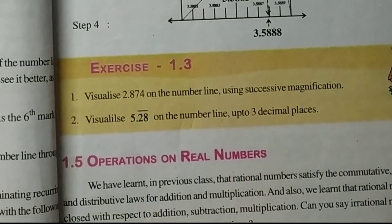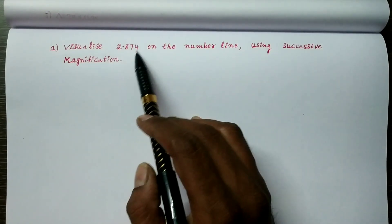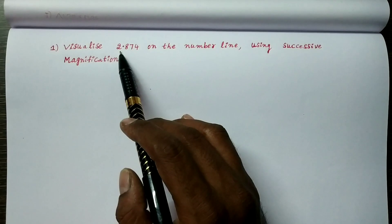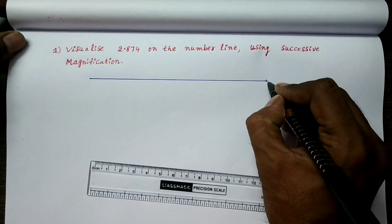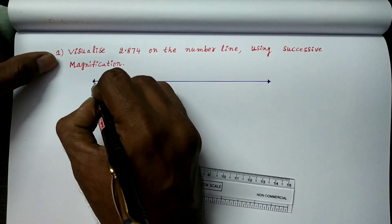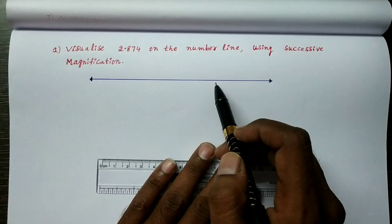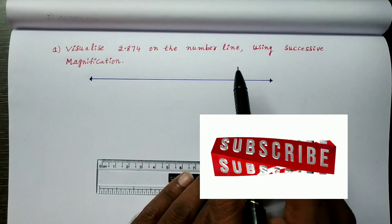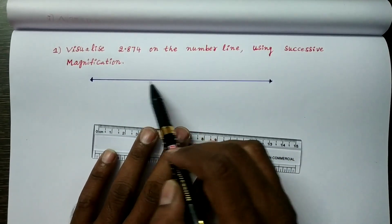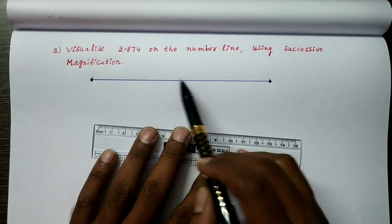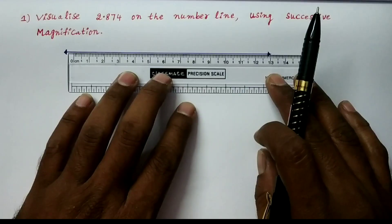The first problem is: visualize 2.874 on the number line using successive magnification. The given decimal number 2.874 lies between 2 and 3. So first, draw the number line. To represent numbers on the number line, every two consecutive numbers should be at equal distance. Take 10 equal parts, which requires 11 points, with a distance of 1 cm between every two consecutive points.